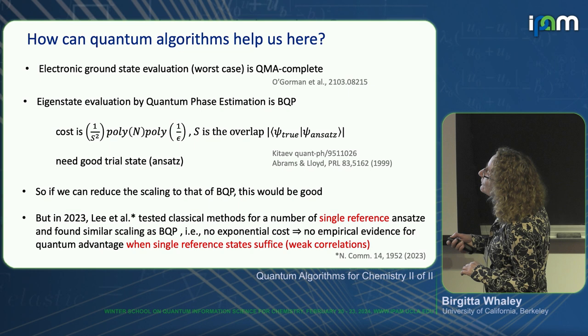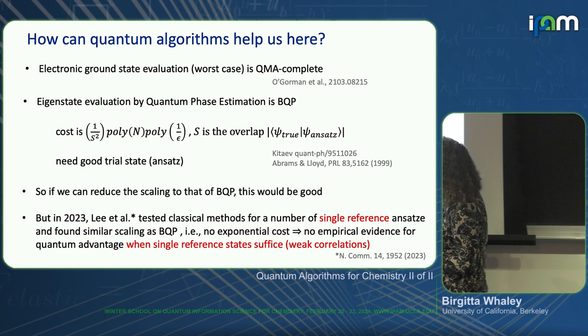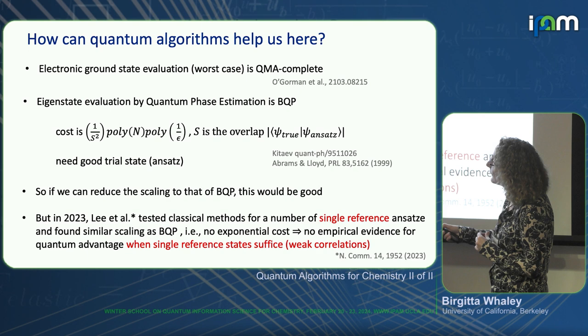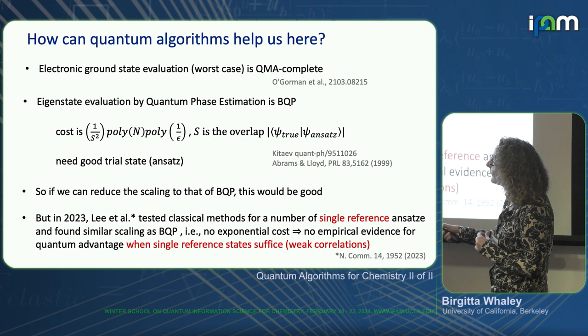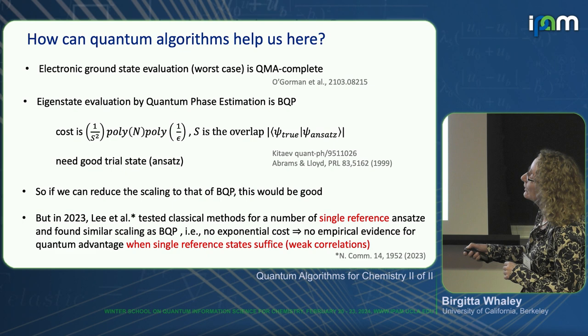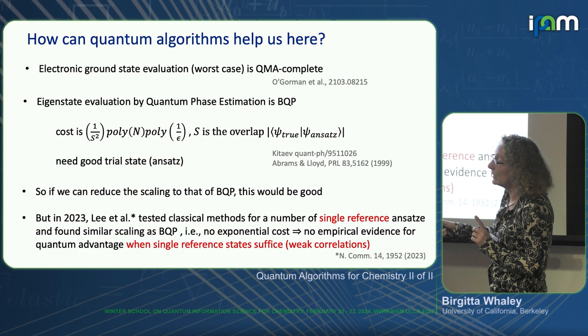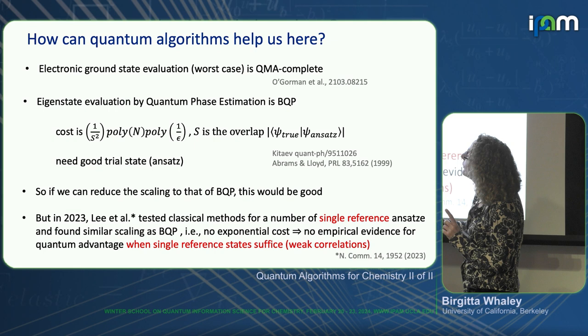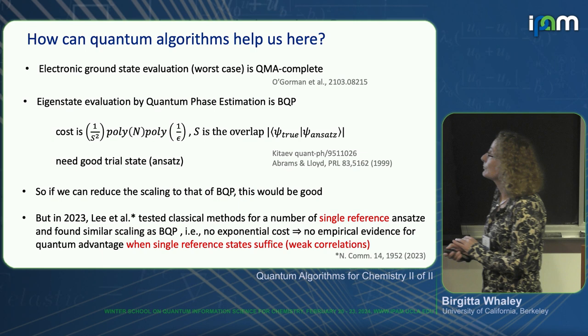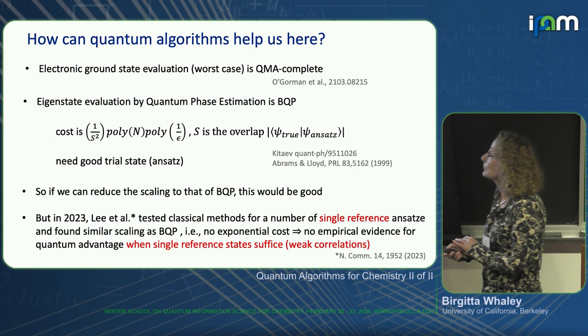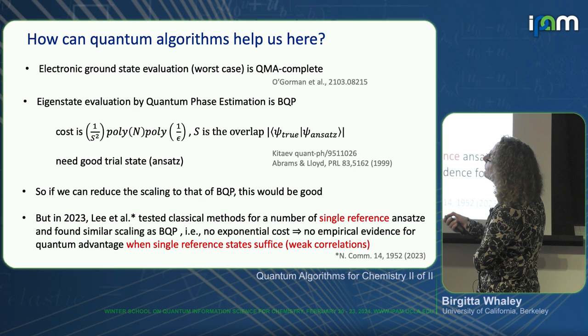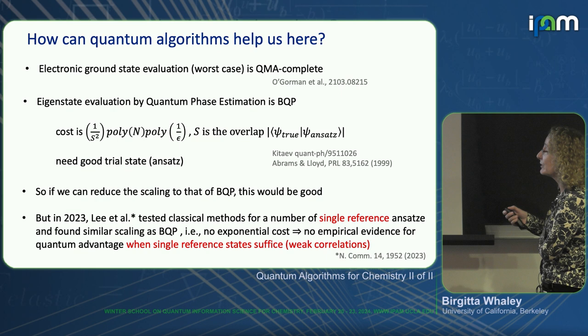Quantum phase estimation is formally in the BQP complexity class. The asymptotic cost goes as one over the overlap squared — that's 1/S² — times a polynomial in the basis size N, and polynomial in one over the accuracy. This puts us in BQP. If we can make sure our ground state electronic structure problem fits into this category by reducing the scaling to that for a specific instance, that would be good.